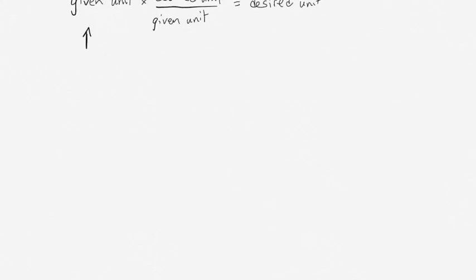Generally what that means is you have a given unit, which represents the units from whatever data you're working with, and then you multiply that by a conversion factor. What you do is you set your conversion factor as a ratio, desired unit over given unit.